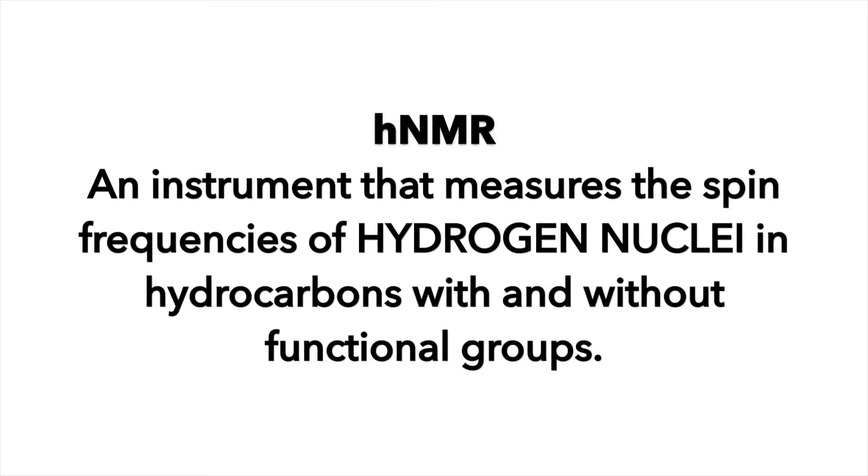Before we talk about shielding and deshielding effects and what that implies on the HNMR spectrum graph, let's first talk about the graph itself. NMR stands for nuclear magnetic resonance, so HNMR is hydrogen nuclear magnetic resonance, which measures the oscillations on hydrogen atoms due to shielding or deshielding effects.